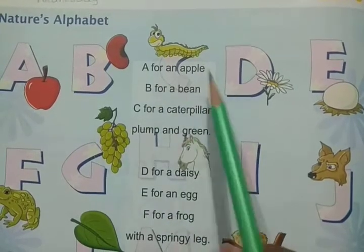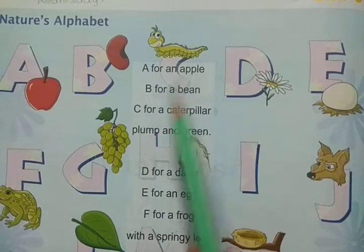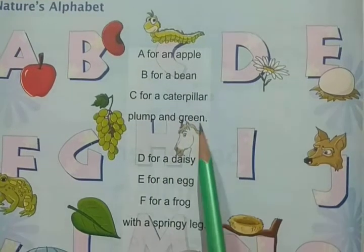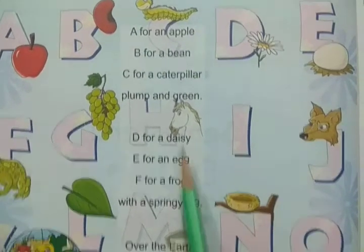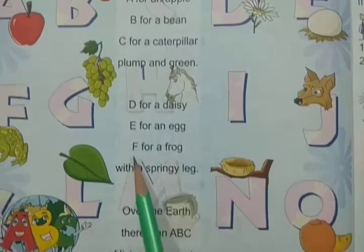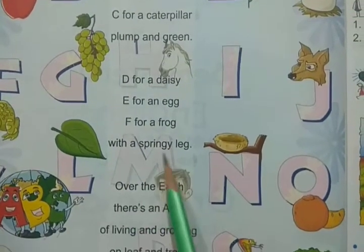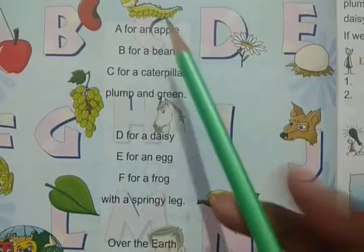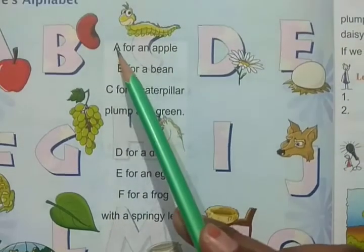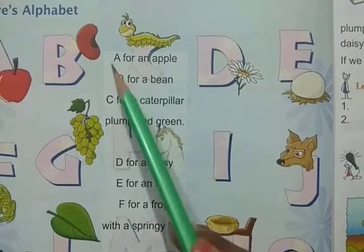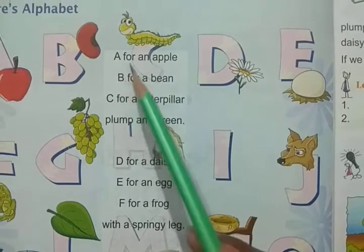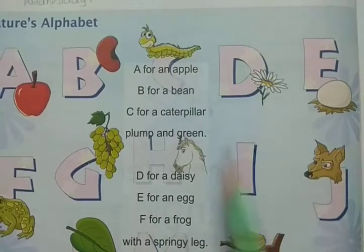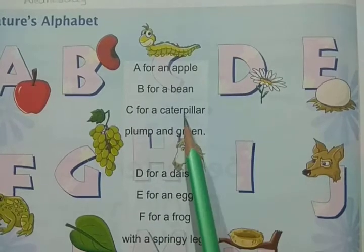See the poem: A for an apple, B for a bean, C for a caterpillar plump and green, D for a daisy, E for an egg, F for a frog with a springy leg. In the first and second stanza, the poet is explaining nature with the alphabet. A for an apple, B for a bean — with a picture you can see here. And C for a caterpillar.